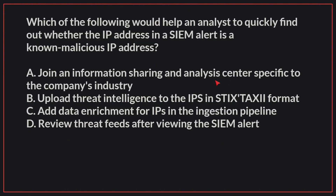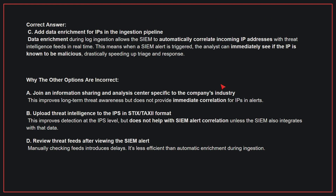Which of the following would help an analyst quickly find out whether the IP address in a SIEM alert is a known malicious IP address? The correct answer is C: add data enrichment for IPs in the ingestion pipeline. Data enrichment during log ingestion allows the SIEM to automatically correlate incoming IP addresses with threat intelligence feeds in real time. This means when a SIEM alert is triggered, the analyst can immediately see if the IP is known to be malicious, drastically speeding up triage and response.